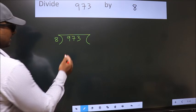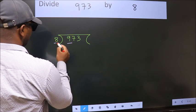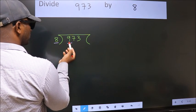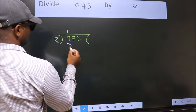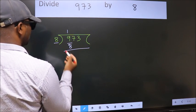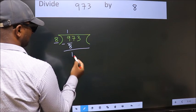Next. Here we have 9, here 8. A number close to 9 in the 8 table is 8 once 8. Now we should subtract. We get 1.